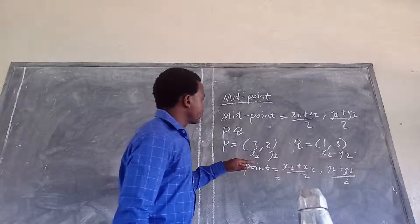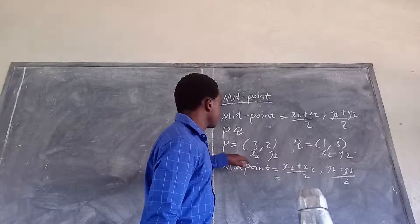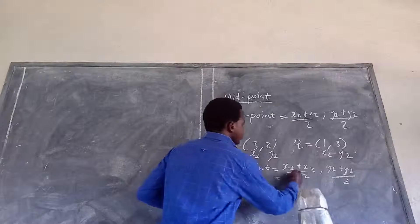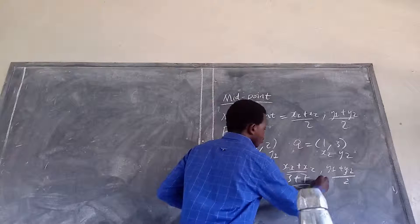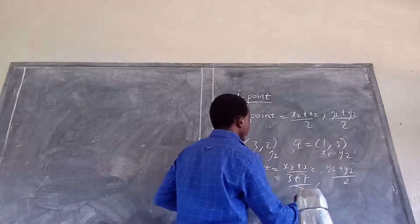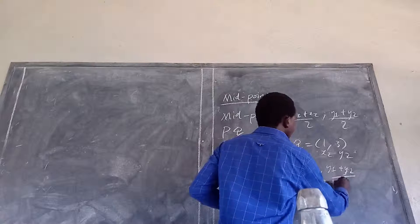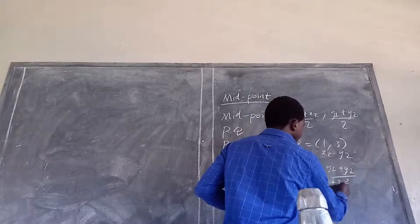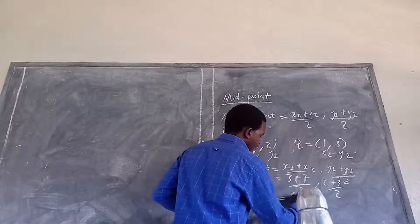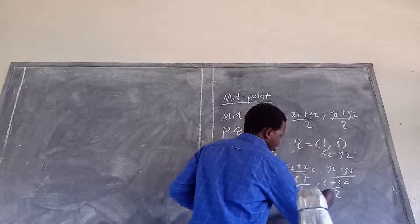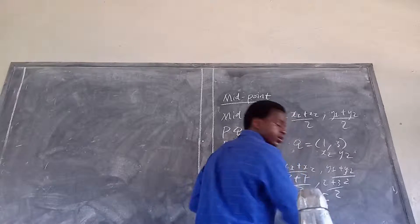Then, my x1 here, my x1 is 3, my x2 is 1 over 2 comma, my y1 is 2 plus, my y2 is 3 over 2. So, this answer will be 4 over 2 comma 5 over 2.